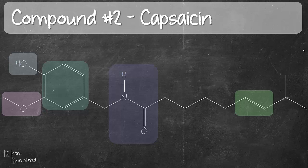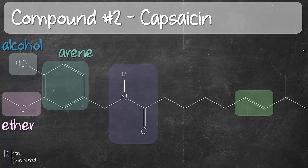Starting from left to right: that's ether — carbon, oxygen, carbon. And on the top there, that's an alcohol because of that OH group. This third one we've seen before in the previous example — that's an arene, a six-membered ring with alternating single and double bonds. And then we have this group called amide — C double bond O right next to a nitrogen. That's an amide. And last but not least, that's an alkene — C double bond C. So these are our five groups for capsaicin.